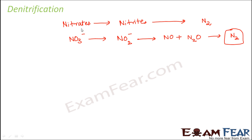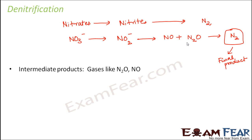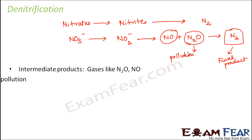In this process there are certain intermediate products. Even though you start with nitrites and atmospheric nitrogen is your final product, certain intermediate products are formed — for example, oxides of nitrogen like NO2. The worst part is that N2O is a greenhouse gas. These gases are also very harmful because they can lead to air pollution and react with ozone. Therefore, the release of these harmful intermediate gases is the major disadvantage of the process of denitrification.